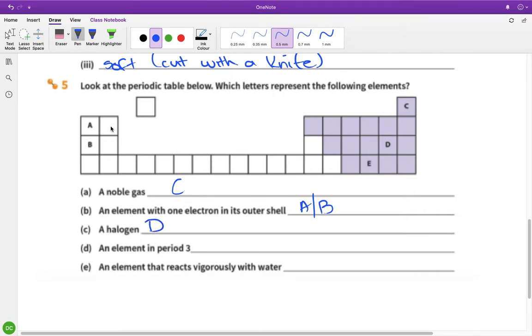An element in period three - so there's period one, there, that's period one, that's period two, that's period three - so that's going to be B or D. Is that right? So did that right? One, two, three, yep, so that's going to be B or D. And an element which reacts vigorously with water, that's going to be A or B as well because that's group one.